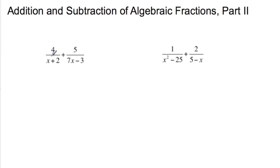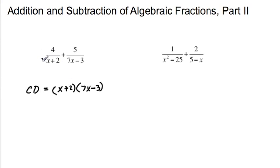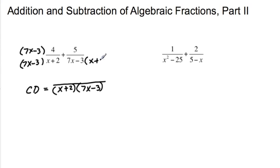In this case, I have four over (x plus 2) plus five over (7x minus 3). The common denominator is going to be (x plus 2) times (7x minus 3). For the first fraction, four over (x plus 2), I need to multiply by (7x minus 3), which means I also multiply the numerator by (7x minus 3). For the second fraction with denominator (7x minus 3), I need to multiply by (x plus 2), which means I multiply the numerator by (x plus 2) as well.